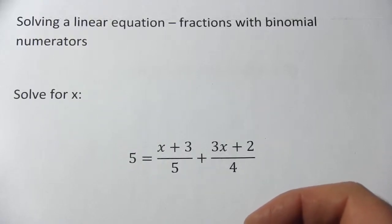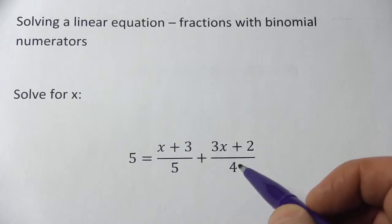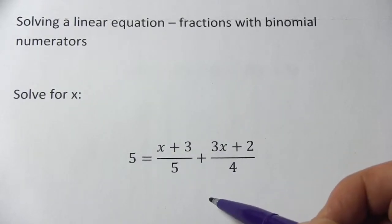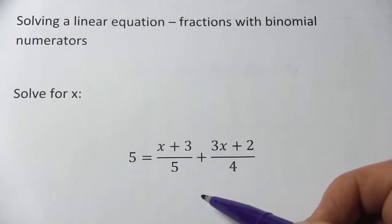Here's an equation we're being asked to solve for x, but it might look a little strange. We've got these fractions where the numerators have more than one term. So how do we deal with that?